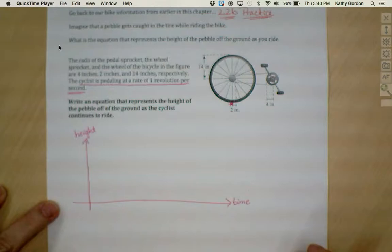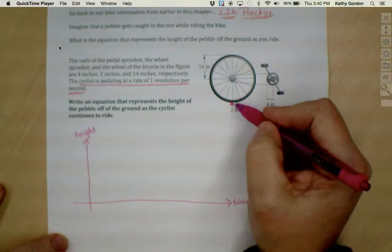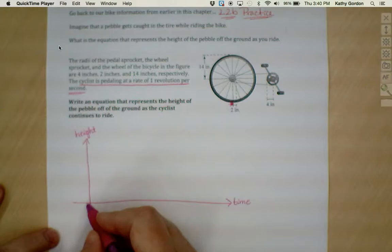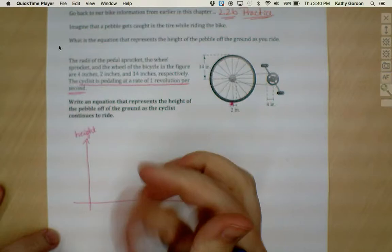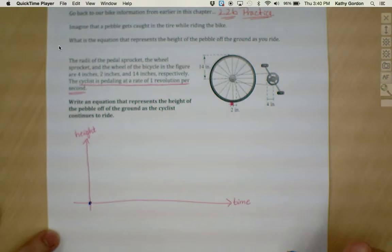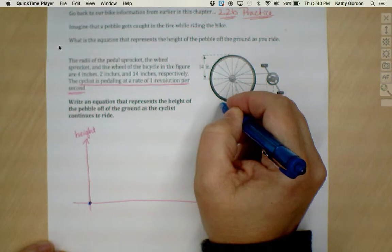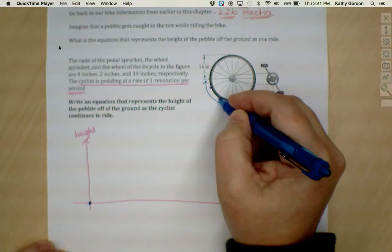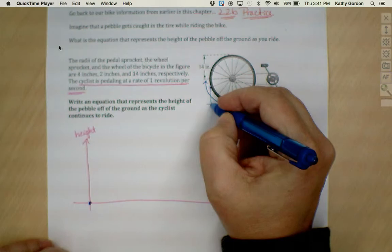I'll make a quick little graph here where my x-axis is going to represent time and my y-axis is going to represent the height of the pebble. When time is zero at the moment where the pebble gets stuck in the wheel, what is the height of the pebble? Well, since it's getting stuck right here on the ground, our height is going to be zero, right there.